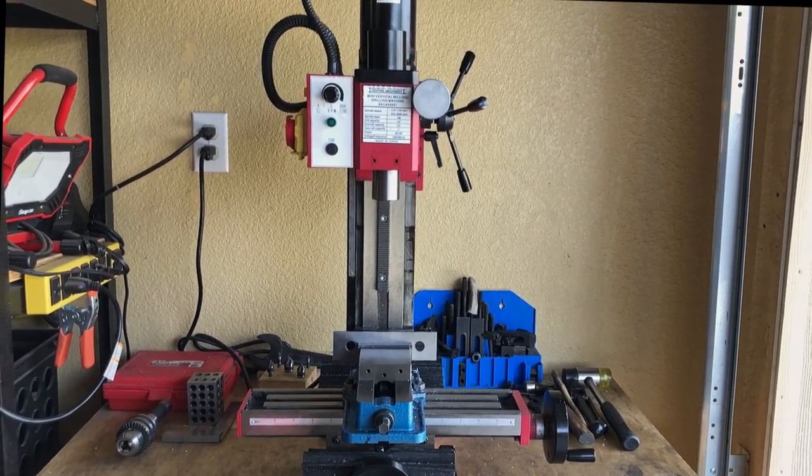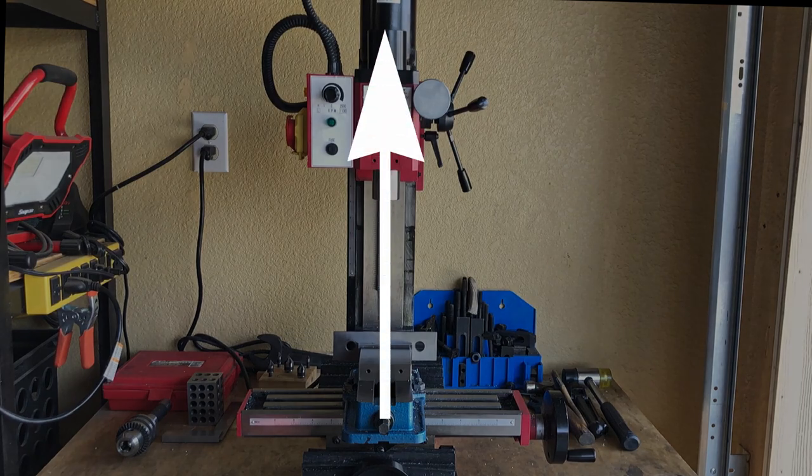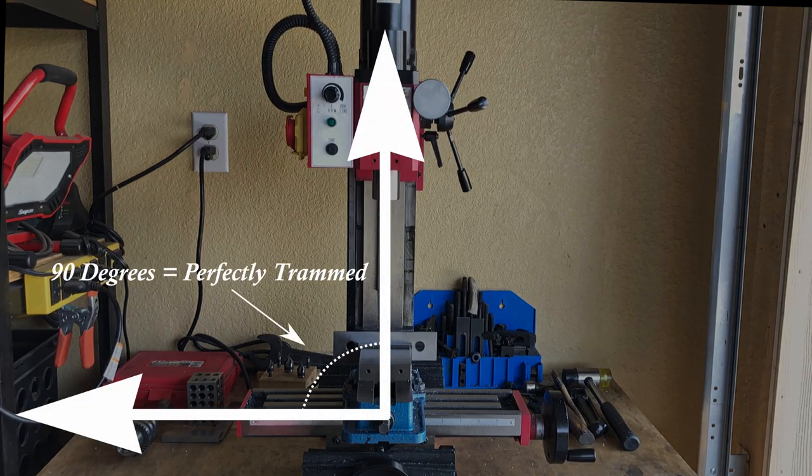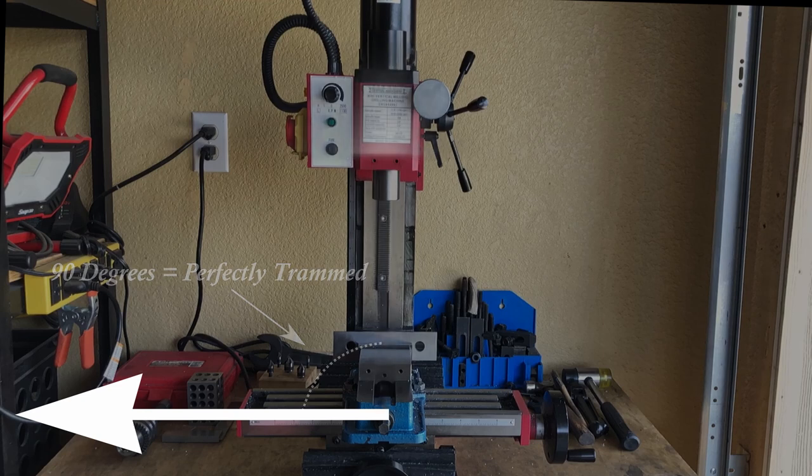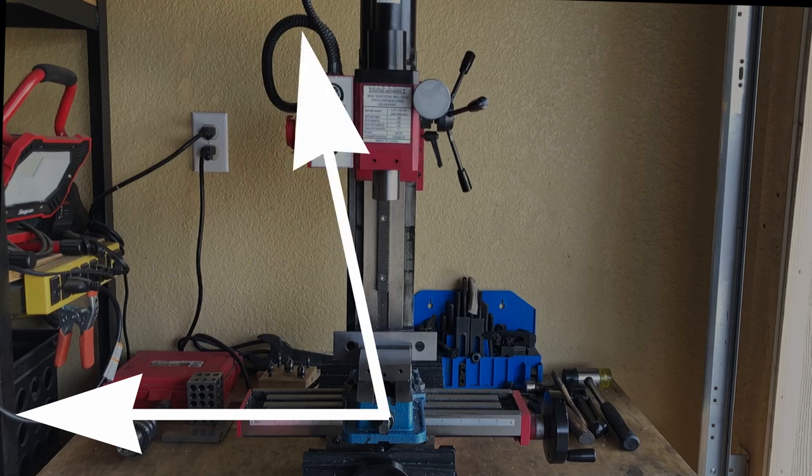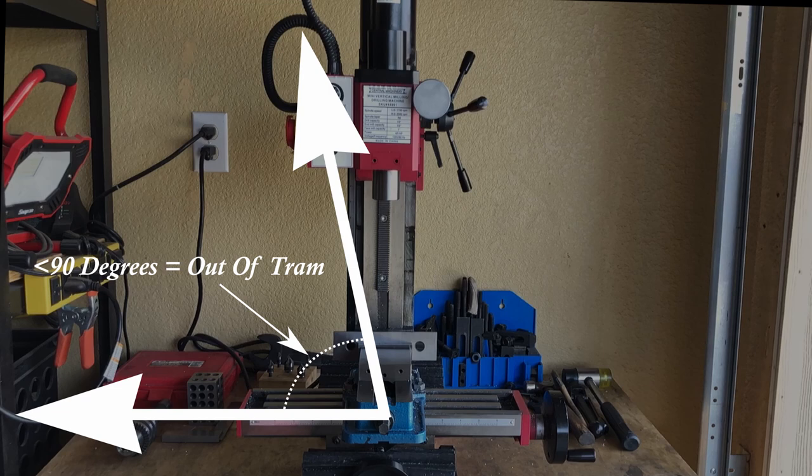A perfect 90 degree angle between the column and the table will give us a mill that is perfectly in tram or tramped. A degree that is less than 90 or greater than 90 will be out of tram and your workpiece will suffer.